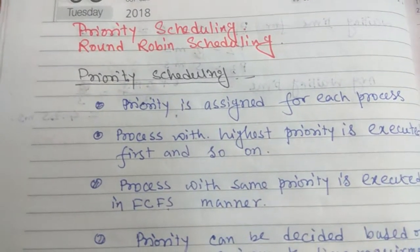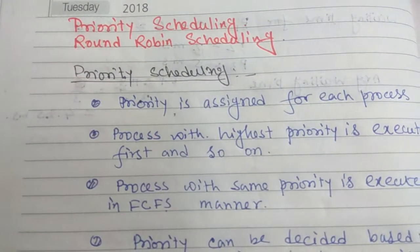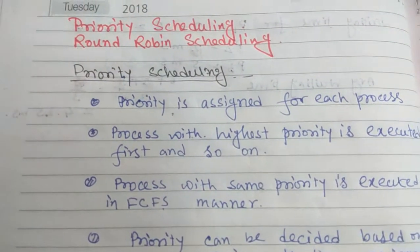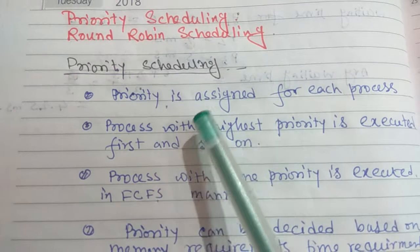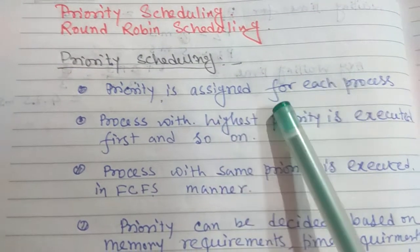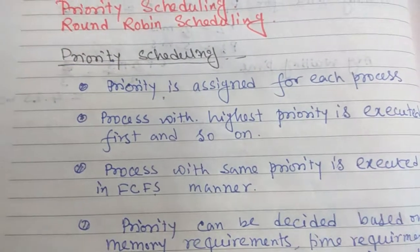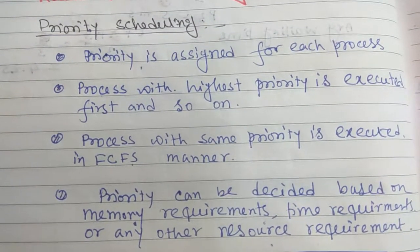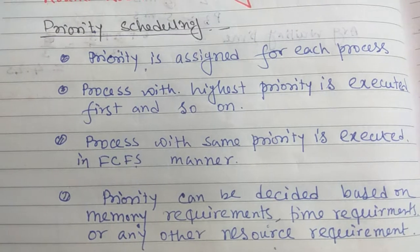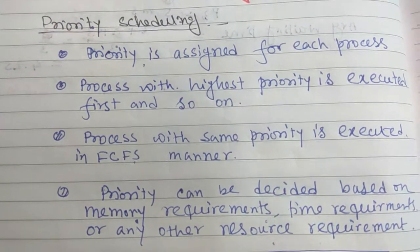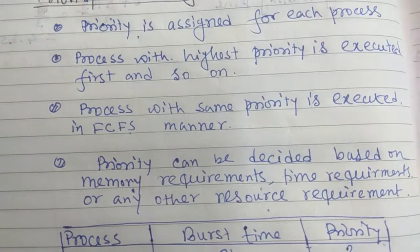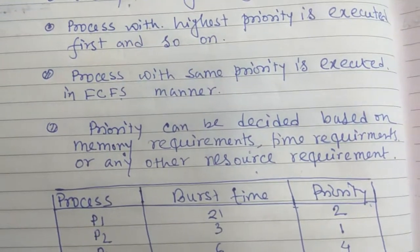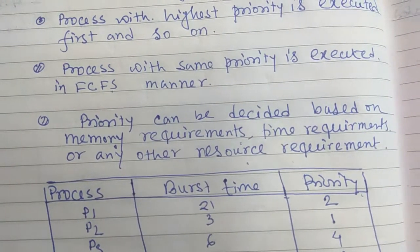Hello friends, welcome to SK Learning Temple. Today we learn about priority scheduling and round-robin scheduling. In priority scheduling, a priority is assigned for each process. The process with the highest priority is executed first, and so on. Processes with the same priority are executed in FCFS manner.